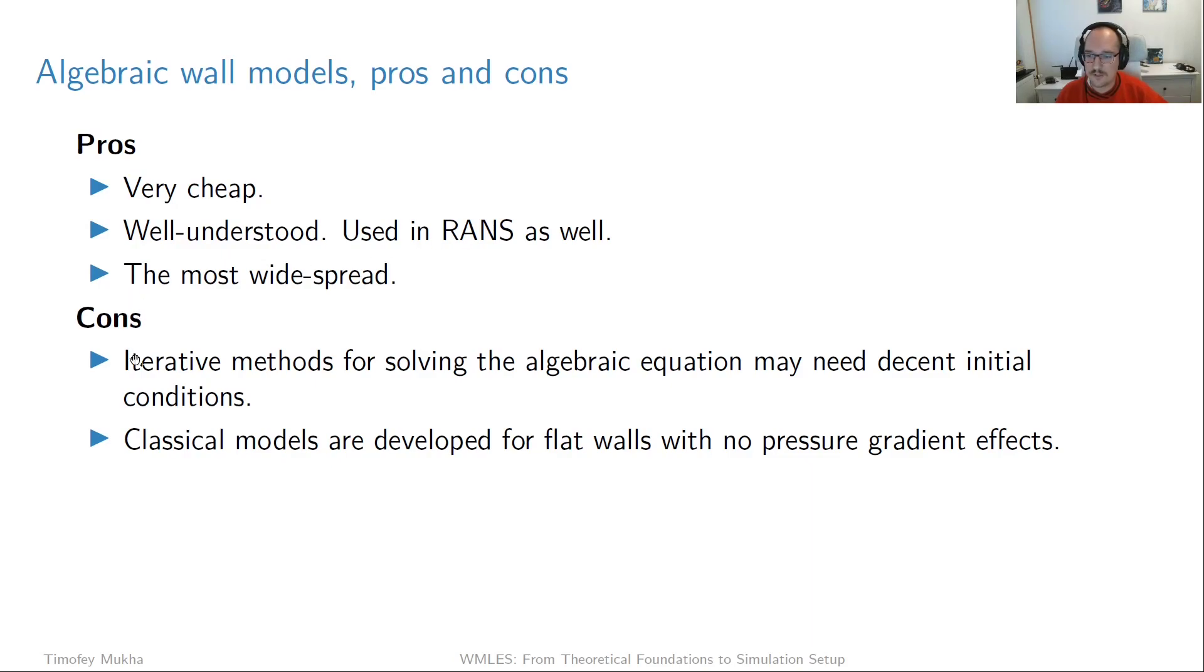Now, regarding the cons. So one small con is that this iterative approach, for example, this Newton method, if you use it, it needs some decent initial conditions to start with because if you start, for example, with some constant velocity in the whole domain, which may be too large compared to what you actually get at the wall, and then you start with a horrible guess for the Newton's method and it diverges or something like that. That can happen. But there is of course ways to avoid it. One way, for example, which I typically use, is that you first run without a wall model, you maybe solve for one flow through time, and by that you get sort of decent velocity values in your domain, and then you can start the wall model and things work perfectly fine. But this is just something to be aware of.